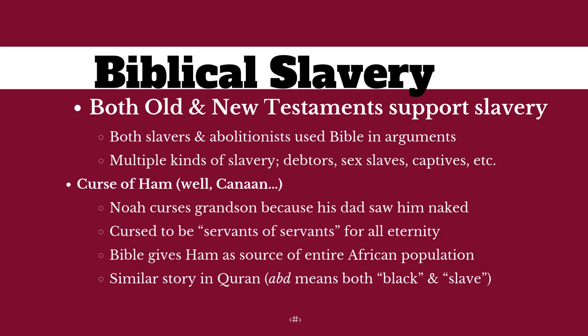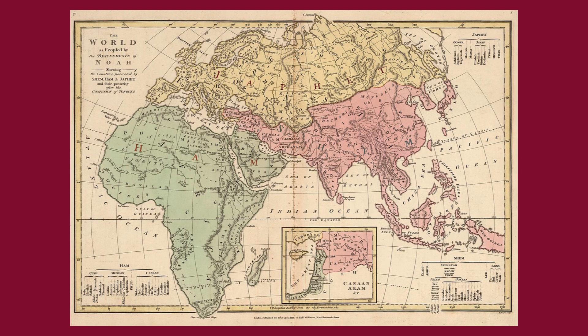If we look at this map, we see a biblical understanding of the world — there's no New World, just Afro-Eurasia. There are three colors, making clear where the three sons of Noah populate: Japheth in the north, Ham in Africa and the Middle East, and Shem in Asia. And the place where these guys combine tells you where the Holy Land is, because that's where Noah is — in what is now Palestine, Syria, Lebanon, etc.